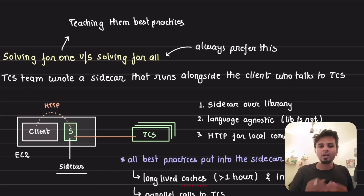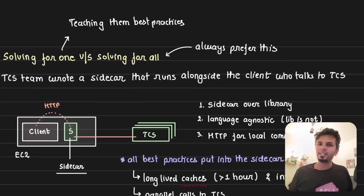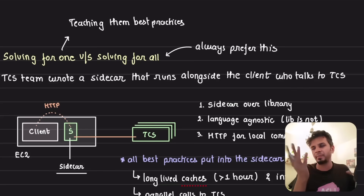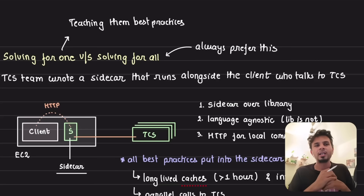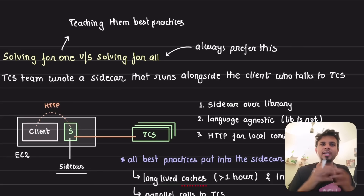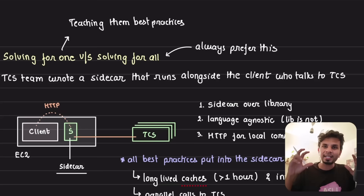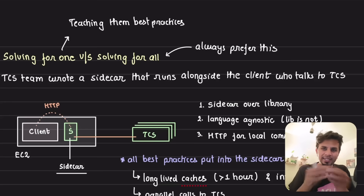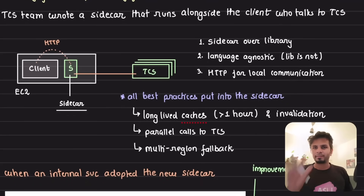So what did the TCS team do? They said: if we rely on other teams to write the client and make HTTP calls, we cannot expect all of them to follow best practices. So we should drive that — we should write the client. We should write a sidecar that does this. That's where the sidecar was introduced.